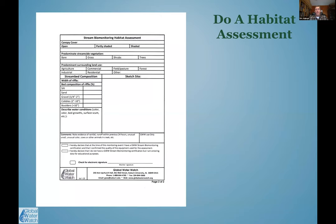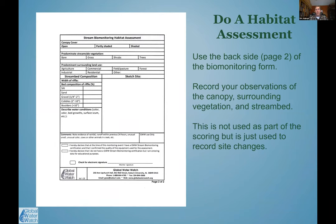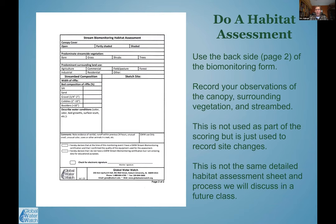While in the field we also do a habitat assessment, which accompanies BIBI sampling as well. The Global Water Watch biomonitoring form includes a habitat assessment form to record observations and note changes from year to year — for example, whether the area is more or less shaded, or whether the riparian zone is more or less intact. These factors can help explain better or worse results compared to previous sampling. A more detailed habitat assessment process will be covered in a subsequent class.